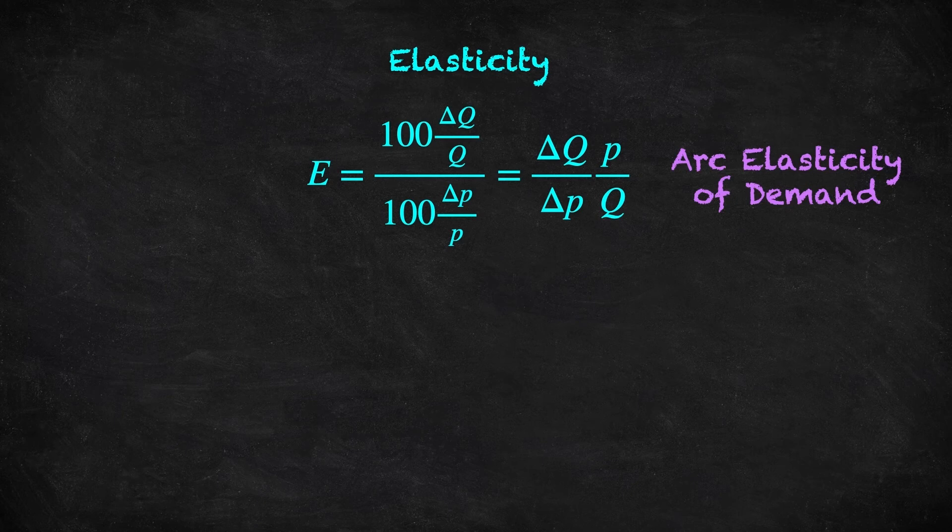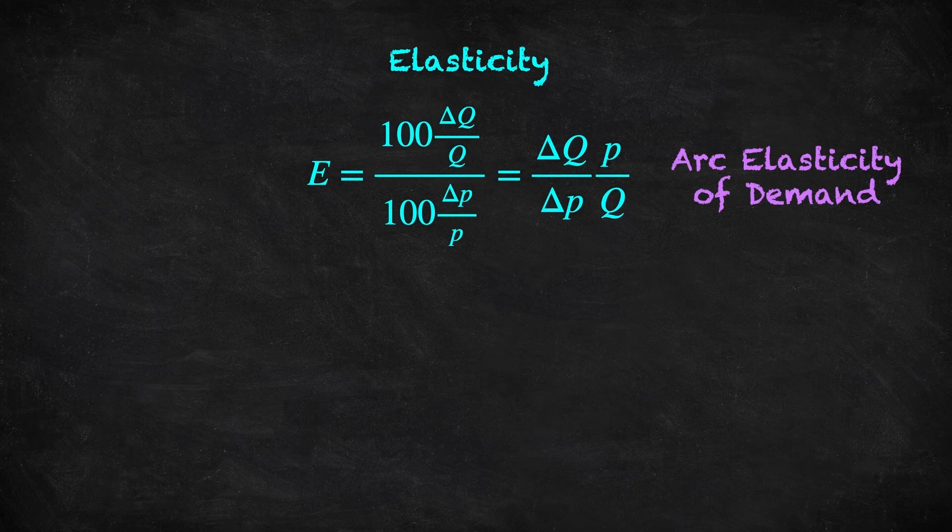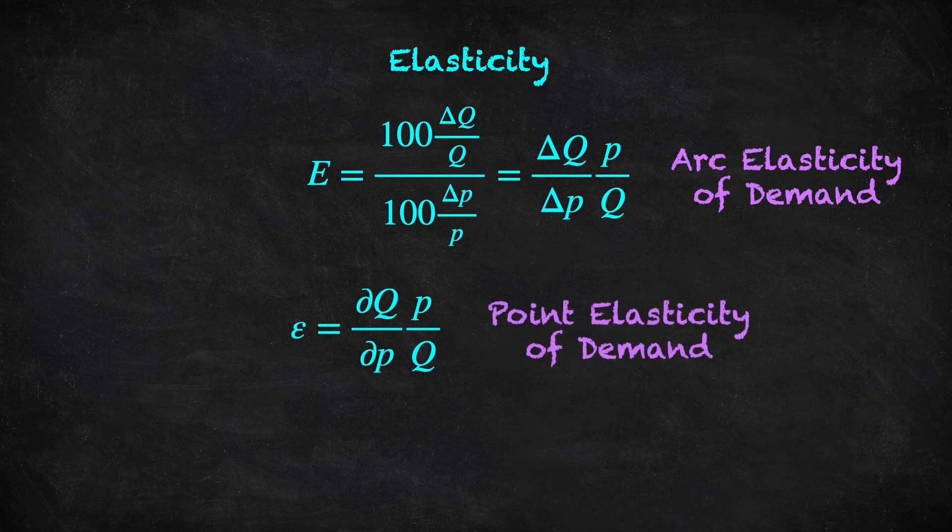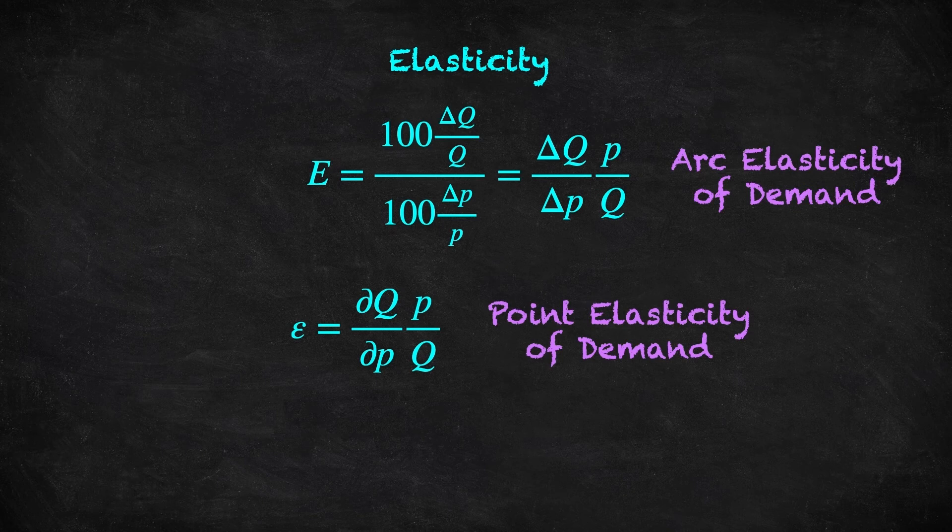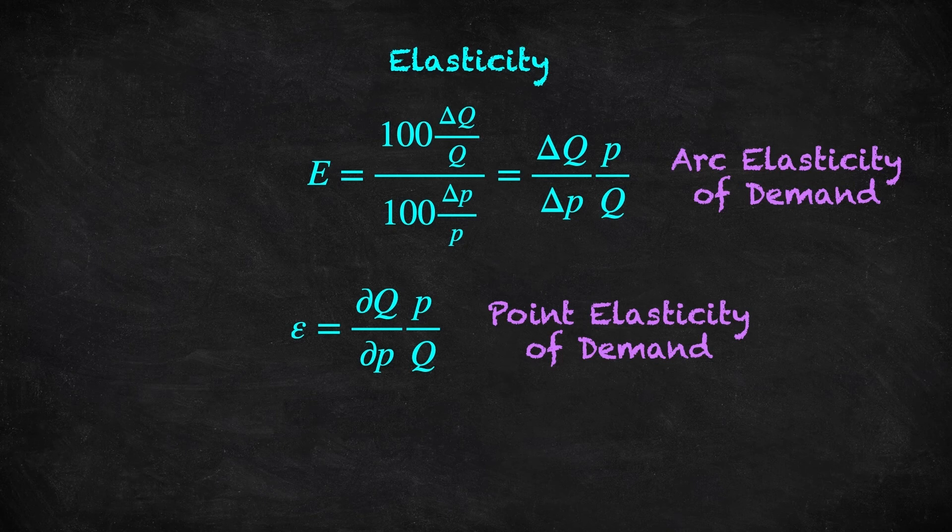As this is a microeconomics with calculus course, we're going to replace this change in Q over change in P expression with this partial derivative. This is called point elasticity of demand. Why would we do this? Well, because we're going to get deeper results much more easily now that we're using calculus. We'll do a nice application to a tax problem in a following video.